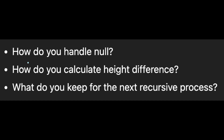Let me summarize the key points to solve this question. The first point is: how do you handle null? The second point is: how do you calculate the height difference? And the third point is: what do you keep for the next recursive process?